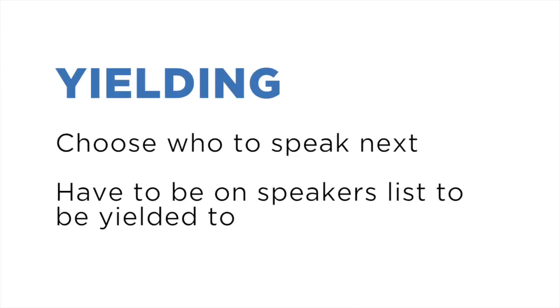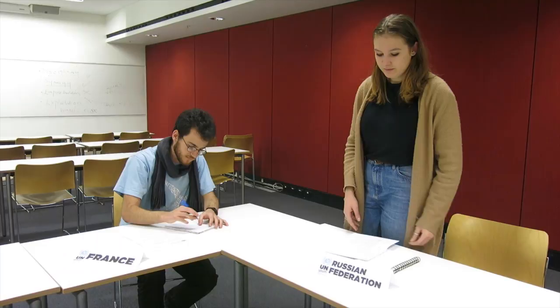How do you wish to yield? Yielding is like if you have a speaking stick and you choose who to pass it on to. That way, instead of hearing from an opponent, you can choose to yield to an ally to back up the points you just made. It's a good idea to send a note asking to be yielded to. Note that you must be on the speakers list in order to be yielded to, and the chair may limit yielding for time reasons. We will yield to China. That is in order — China, you have the floor.